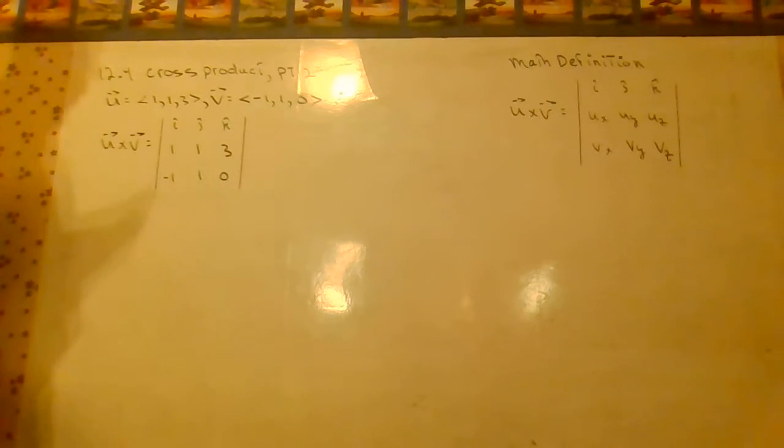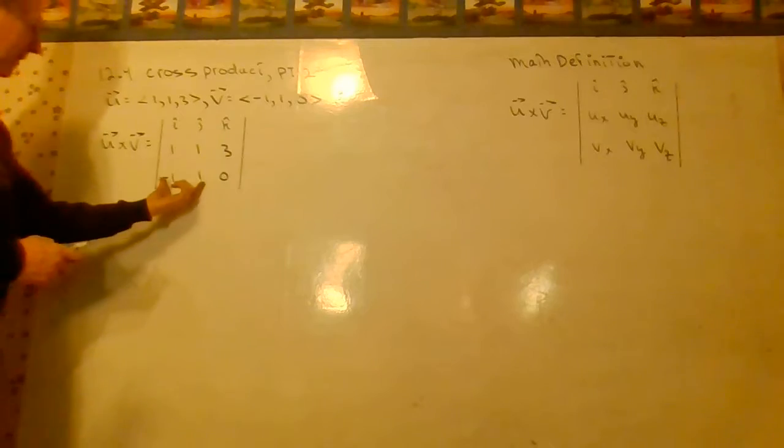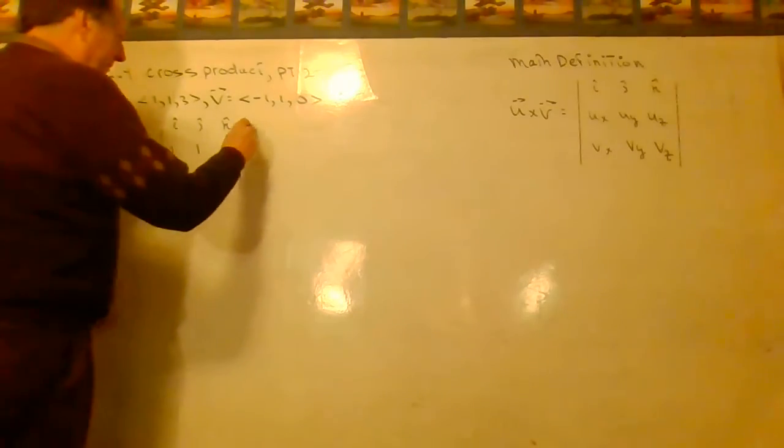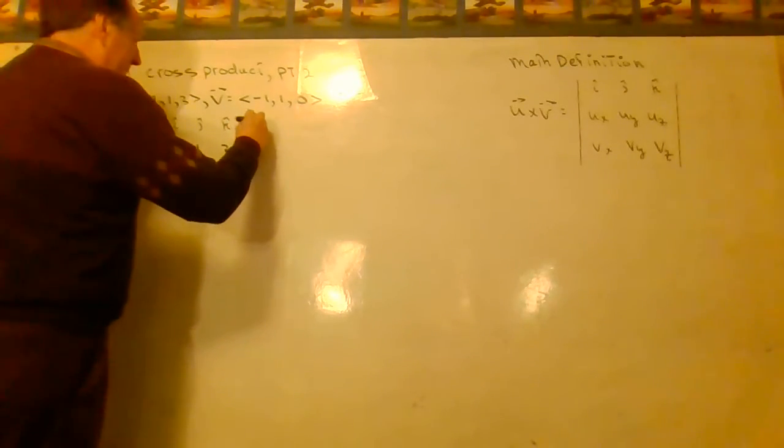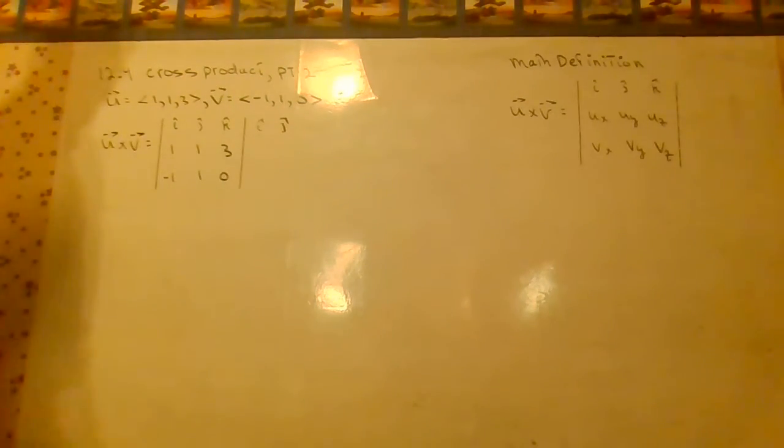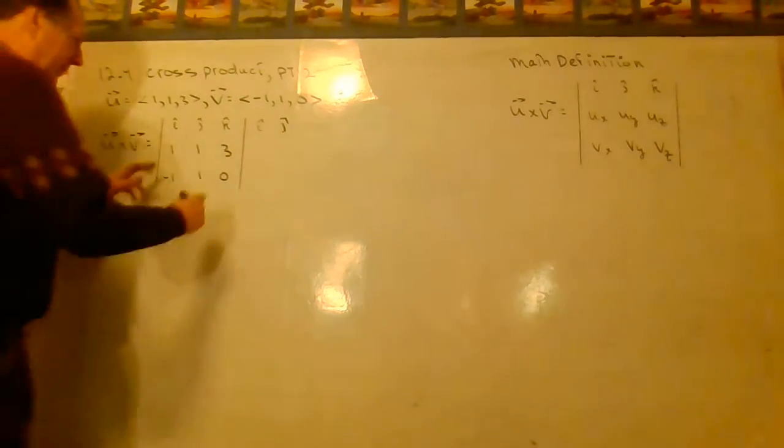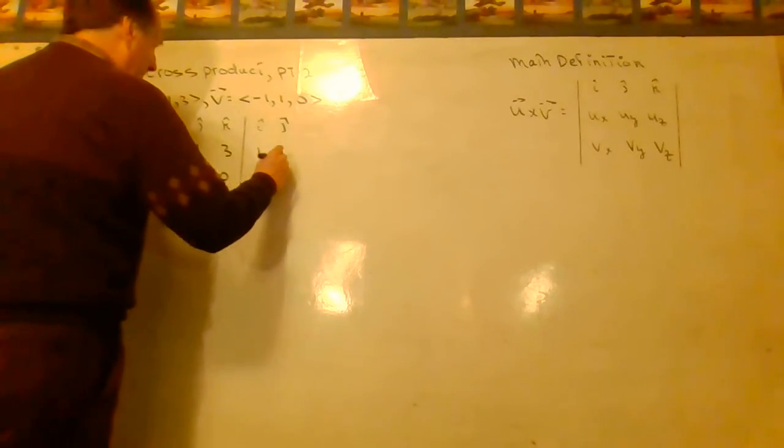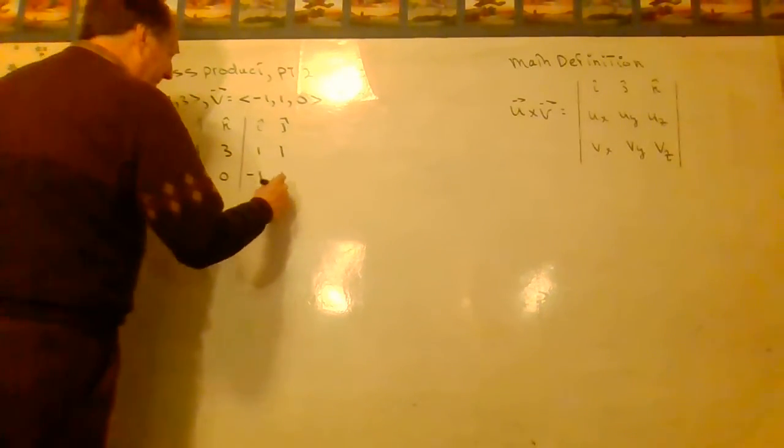Here's a simple way to evaluate what's called a 3 by 3. You copy these two columns over here. There are other variants of this method, but this is just one way to do it. Copy a 1, a 1. Copy a negative 1, and a 1.